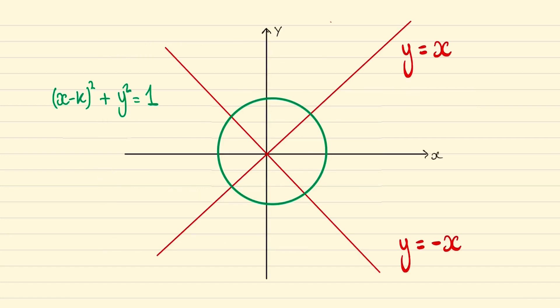We can answer this problem by looking at it on the Cartesian plane. So realizing that (x-k)² + y² = 1 is a circle with radius of 1 and a centre at (k,0).